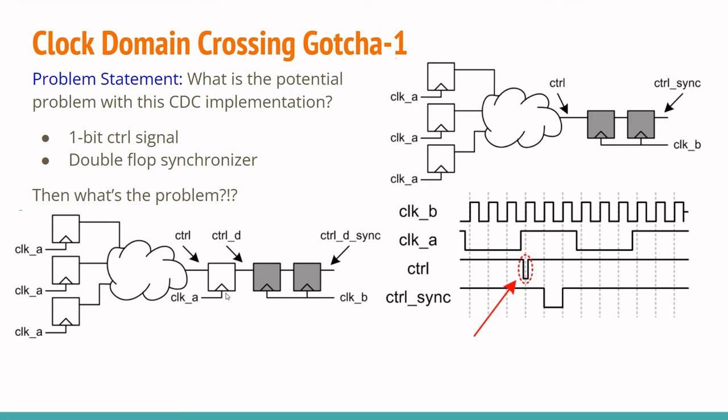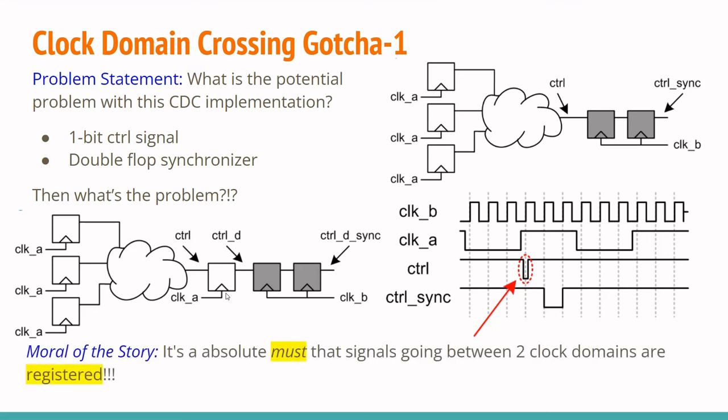What do we learn from this problem? I want you to really pay attention to this small but rampant problem in the industry. The moral of the story is: it's an absolute must that signals going between two clock domains are registered. This is the most important flop in this entire circuit. If you don't have this flop that registers the control signal before it's sent across to clock domain B, you're going to have real problems.